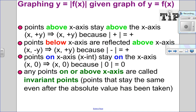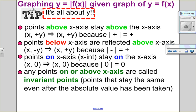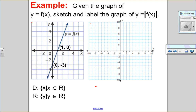Here are the steps we're going to be doing. When we talk about functions, it's all about the y. Any points above the x-axis stay above, because the absolute value of a positive is a positive. Any points below the x-axis are reflected above, because the absolute value of a negative becomes positive. Any points on the x-axis stay on the x-axis, because the absolute value of zero is zero. Now let's talk about invariant points — any point on or above the x-axis is an invariant point. Invariant points are points that stay the same even after the absolute value has been taken.